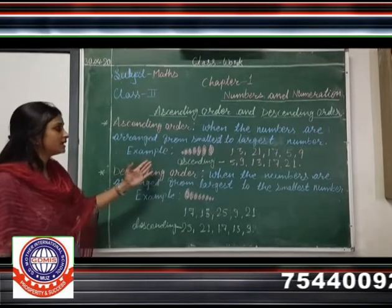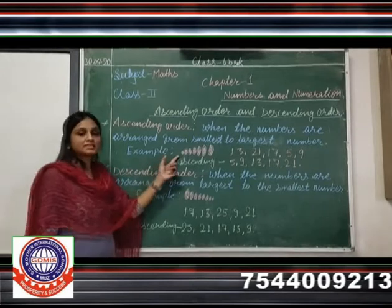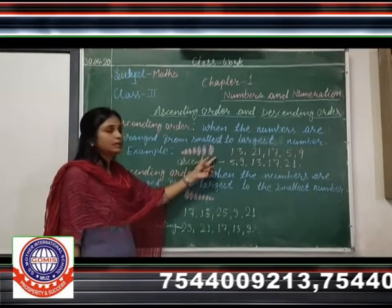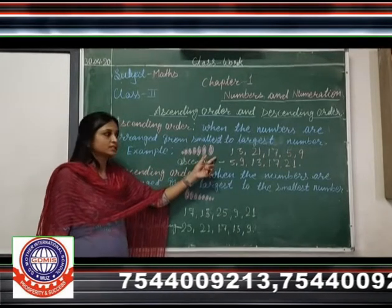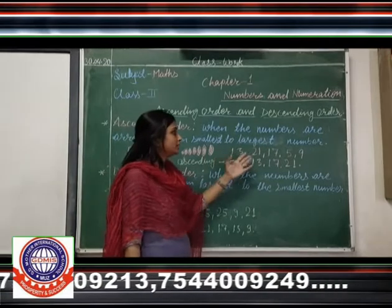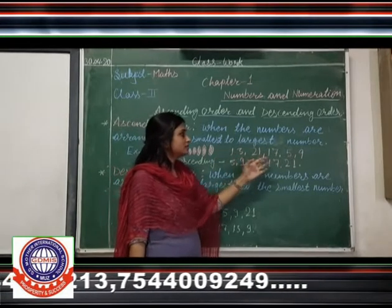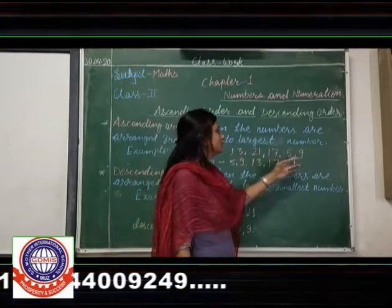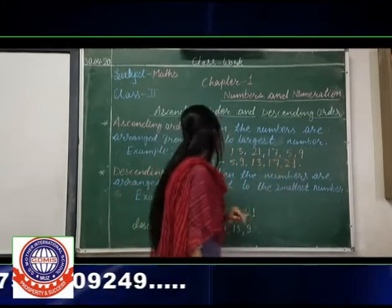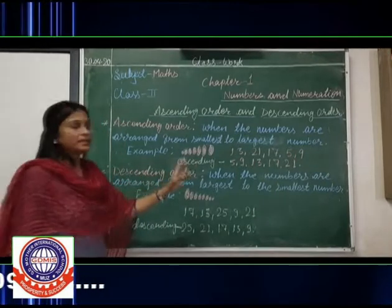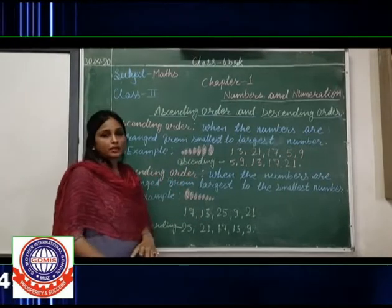Look at the figure. We start from the smallest and aim for the largest. The numbers are: 13, 21, 17, 5, and 9. Let's arrange them in ascending order.